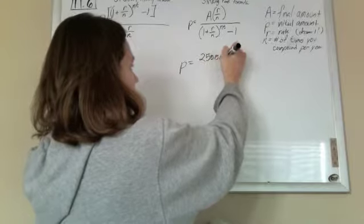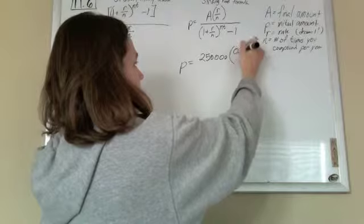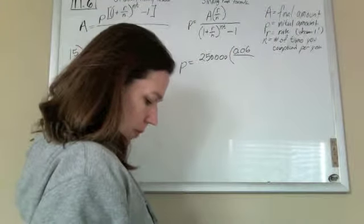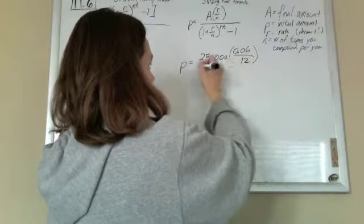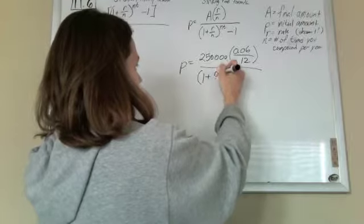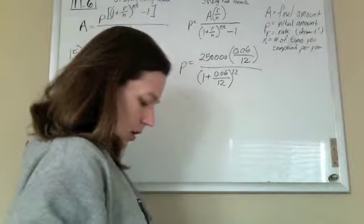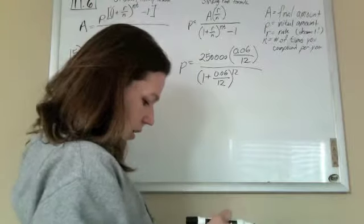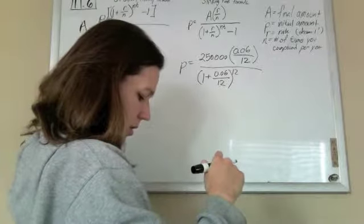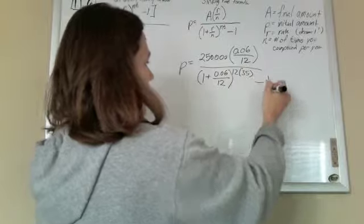And then the rate is 6%, so 0.06, and compounding monthly, so n is 12, divided by 1 plus 0.06 divided by 12. Again, n is 12, and we need to do this in 35 years, and then subtract 1.